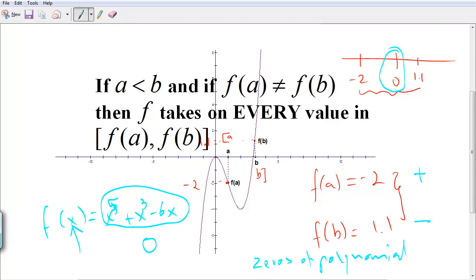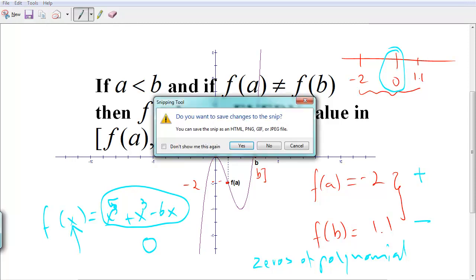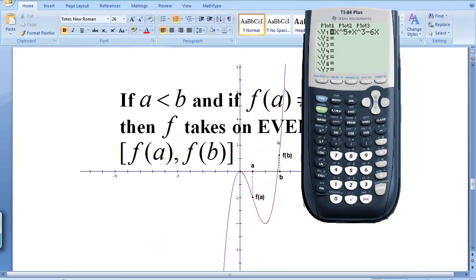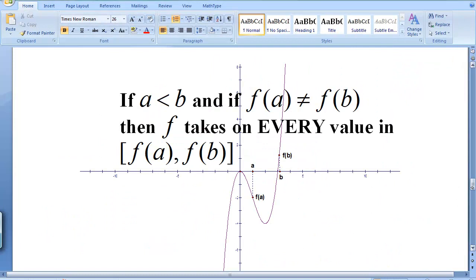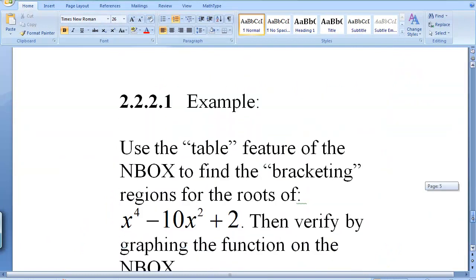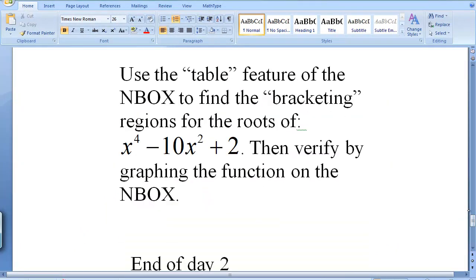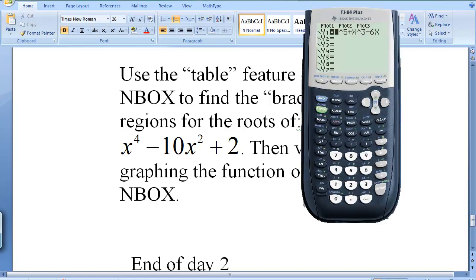Alright, let's take a look at some examples. It says use the table feature of the NBOX to find the bracketing region for the roots of x to the 4th minus 10x squared plus 2. Then verify by graphing the function on the NBOX. So let's clear this out, put in our function: x to the 4th minus 10x squared plus 2.